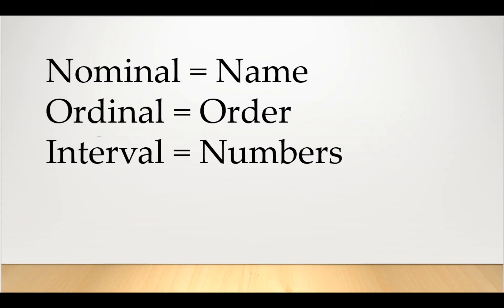So like nominal data, we can still do a count and find the mode — which age has the most number of people. But we can also add these up and get an average, calculate a standard deviation, and do other mathematical processes with this information. In summary, nominal is just naming information. Ordinal is also just naming but puts the information in some sort of inherent order. And interval — we actually have numbers that we can apply mathematical applications to.